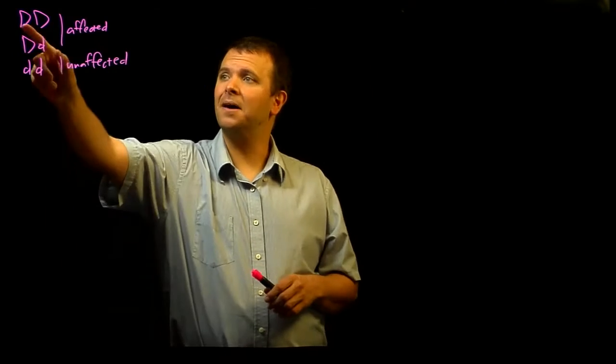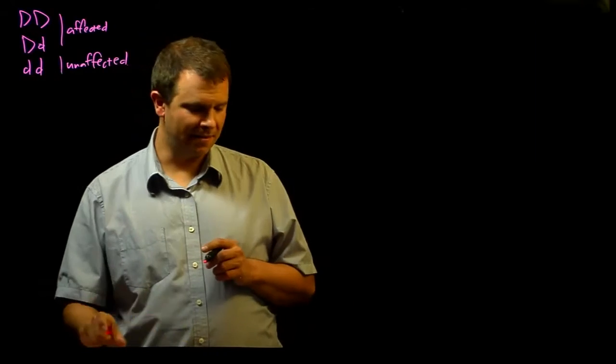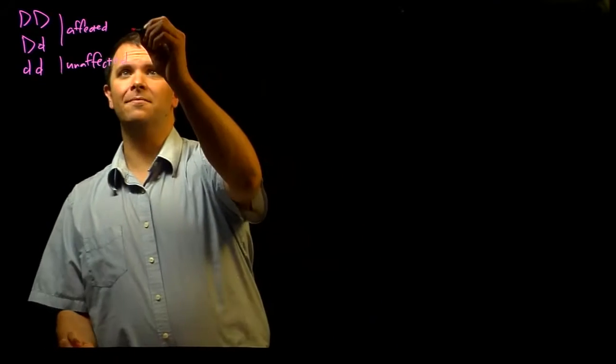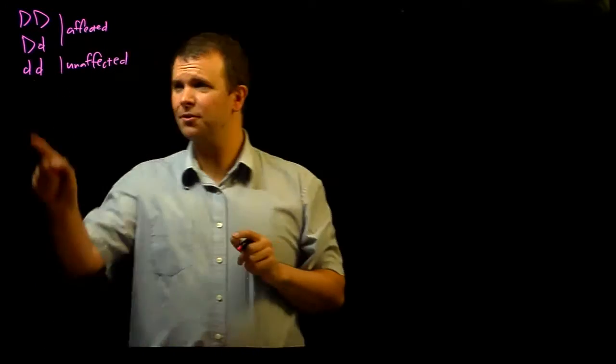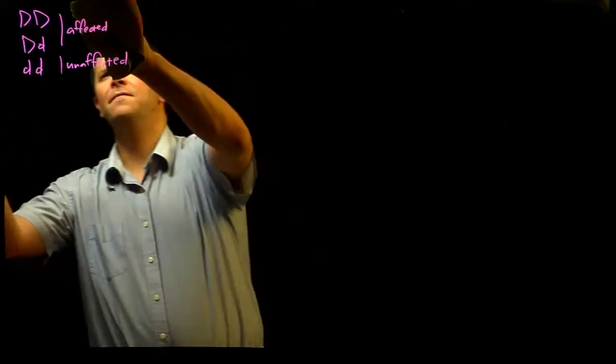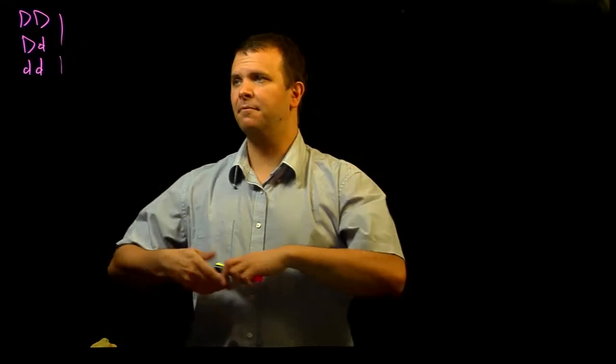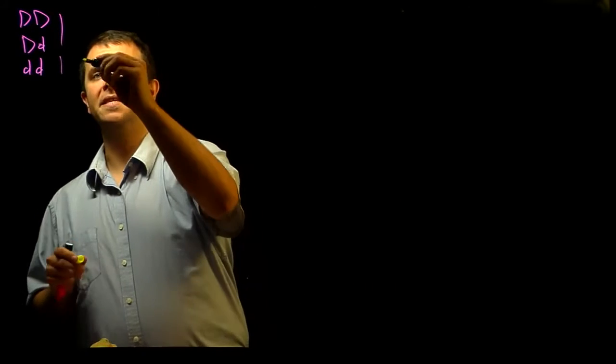again, the dominant allele big D and the recessive allele little d. And so, a person who is little d little d, instead of being unaffected, their probability of developing breast cancer is 13%.